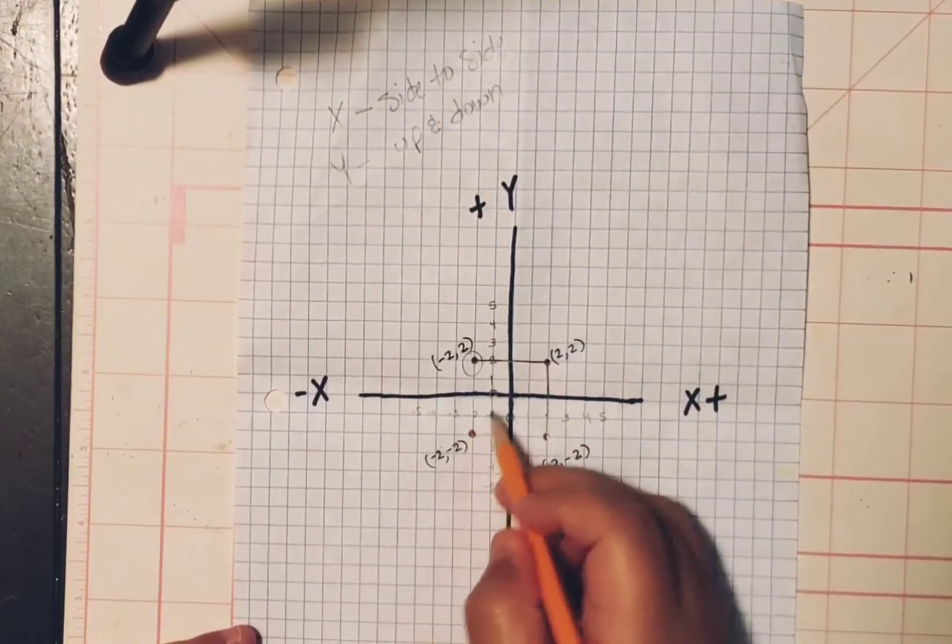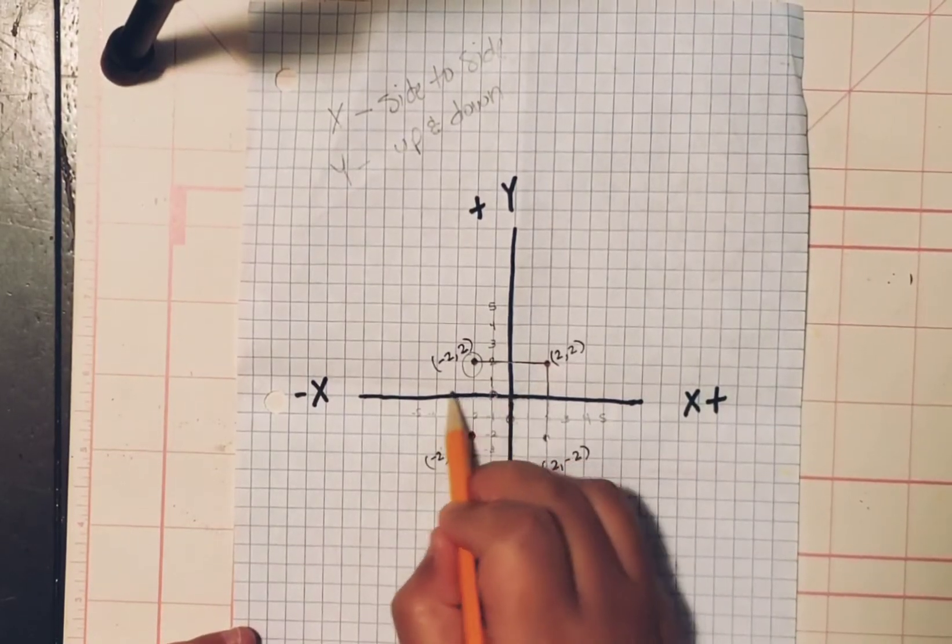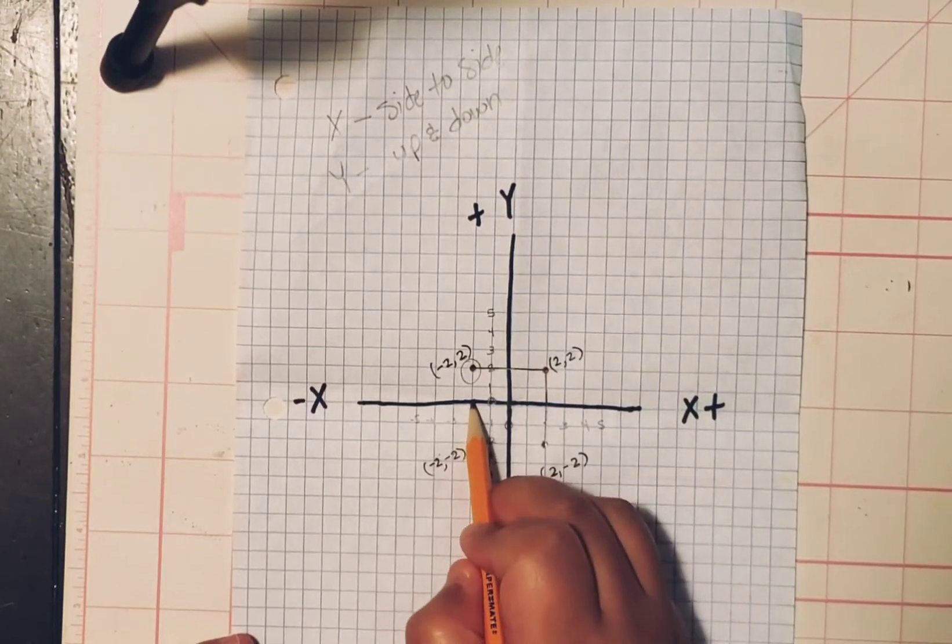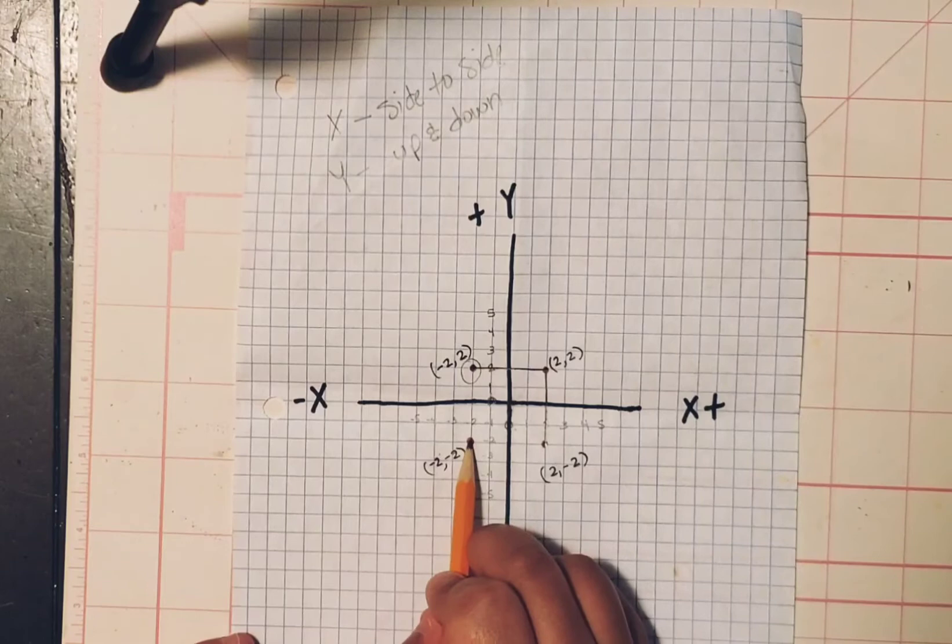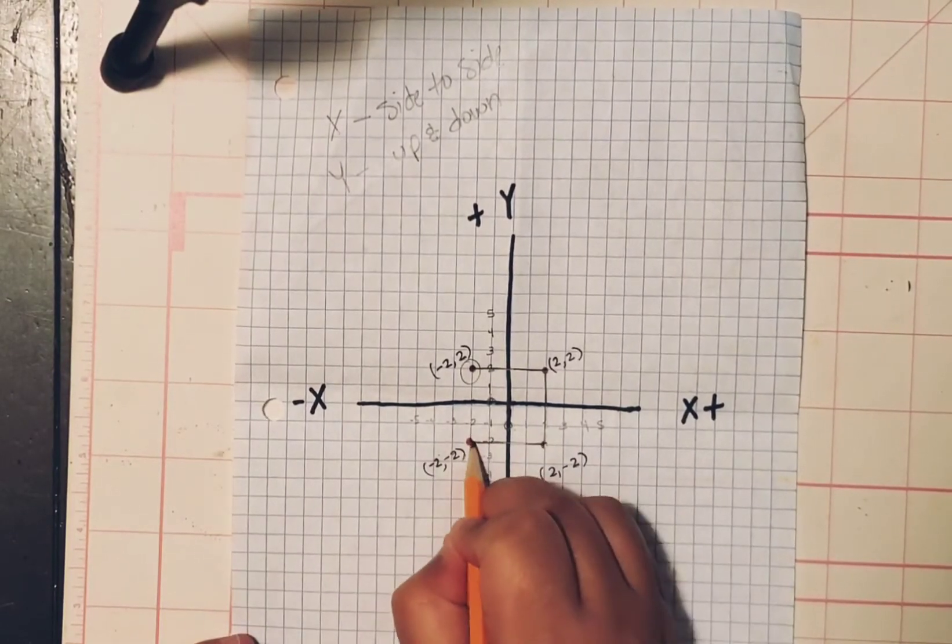And then this one over here, we're going to do the same thing. You're going to work on your X line. And you're going to move to the left, two, which is a negative two. And you're going to go down two, another negative two.